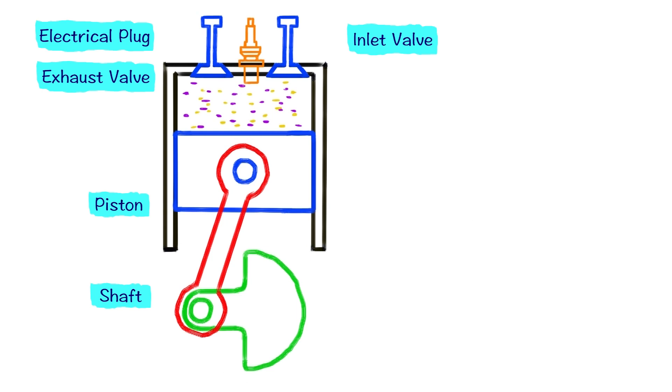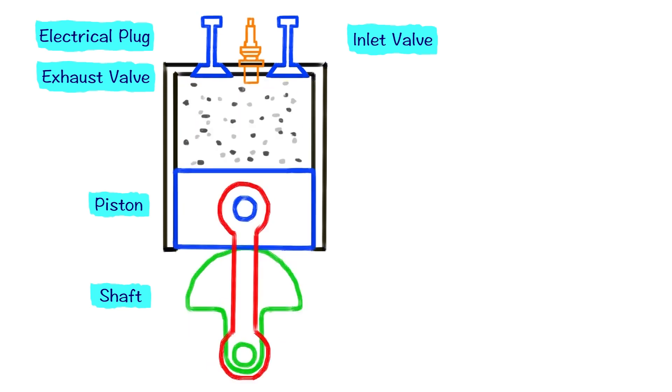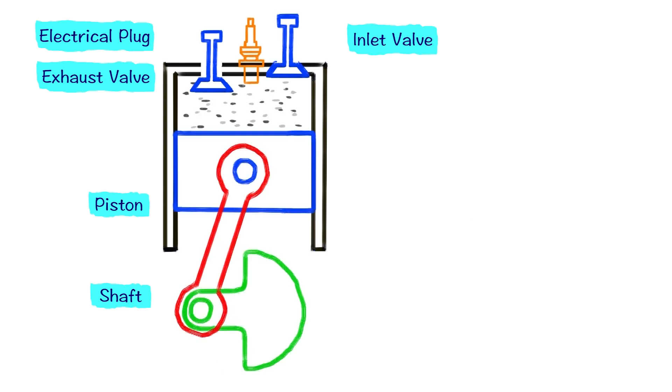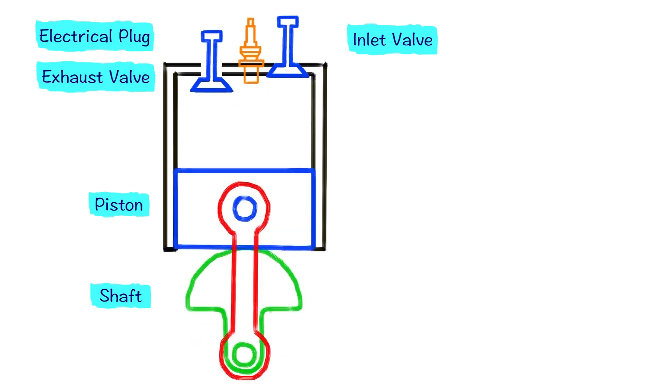Okay, so now let's start all over again. Inject the air-gasoline mixture, push the piston up to increase pressure and temperature, and light the spark. Boom! Again it's working, the piston is pushed down, the shaft is rotating. Now let's open the exhaust valve.